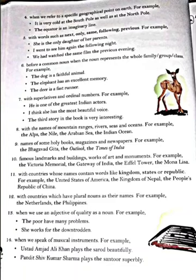Next, rule 5: with words such as next, only, same, following, and previous, we will use the definite article. For example: She is the only daughter of her parents. Next rule: before a common noun when it represents the whole family, group, or class, we use article 'the'. Like: The dog is a faithful animal — here 'the dog' represents the whole group or family of dogs. Same with the elephant and the deer.